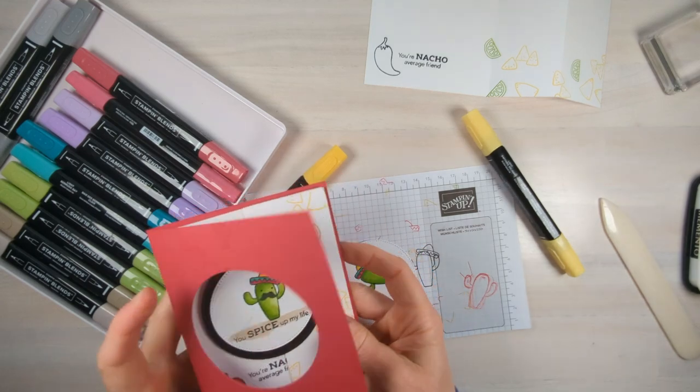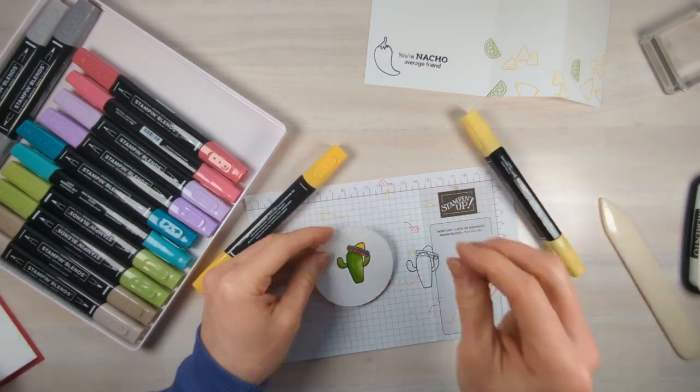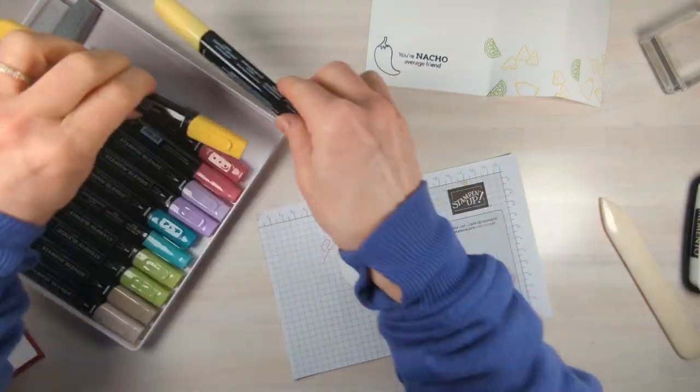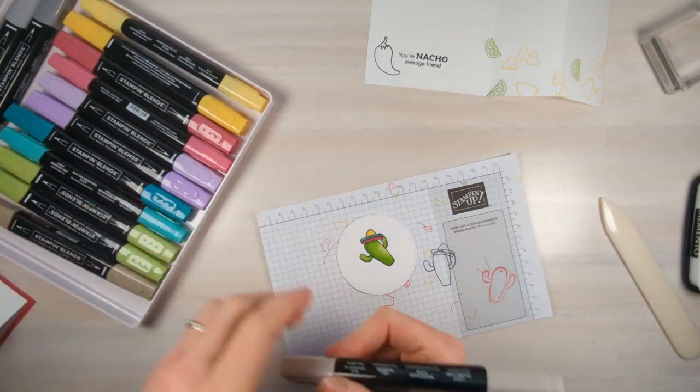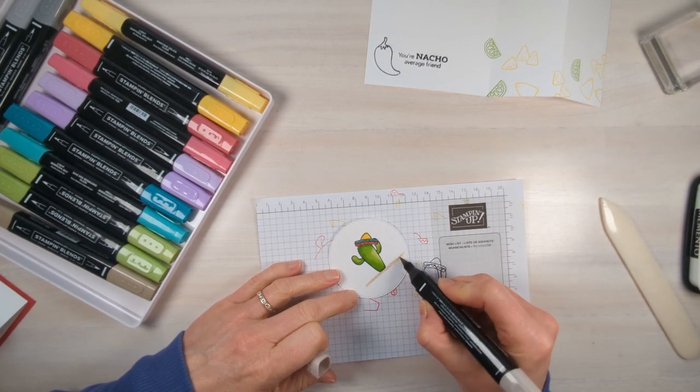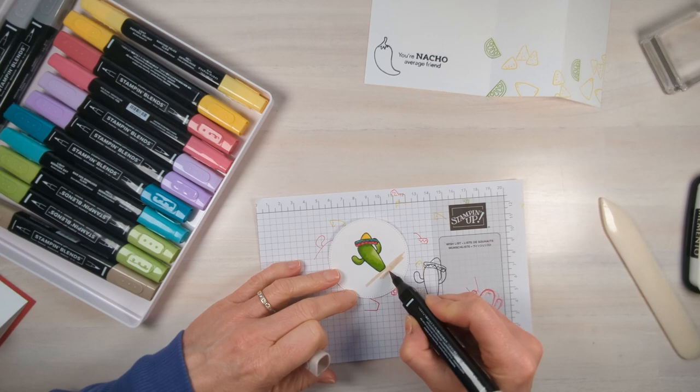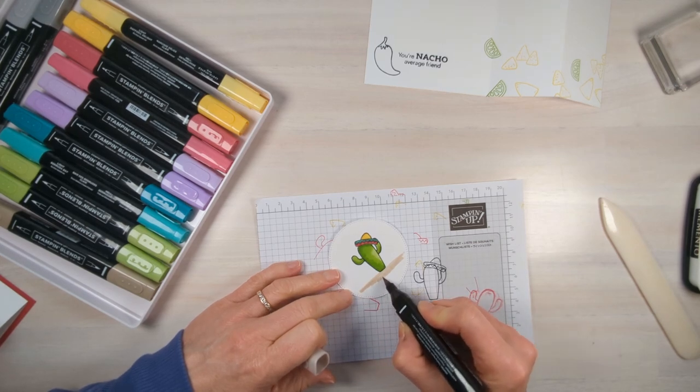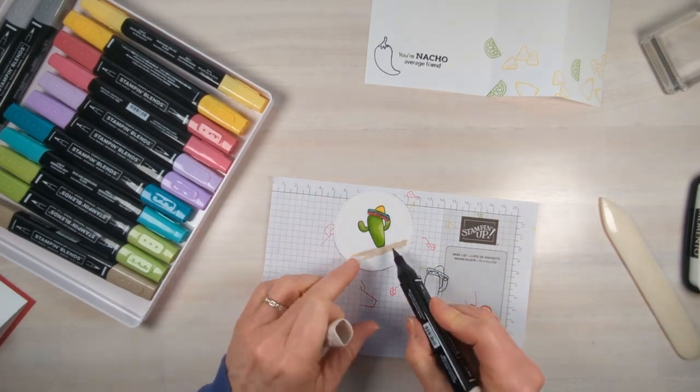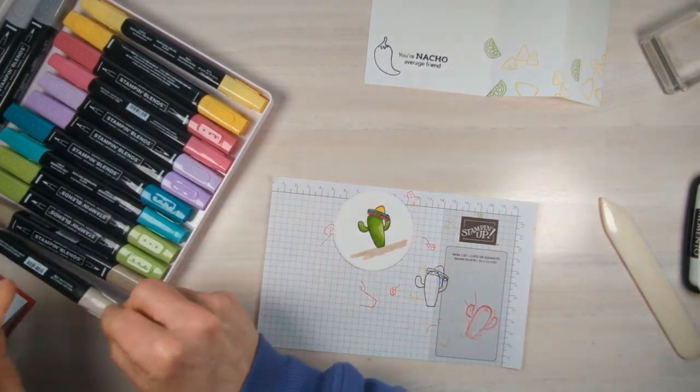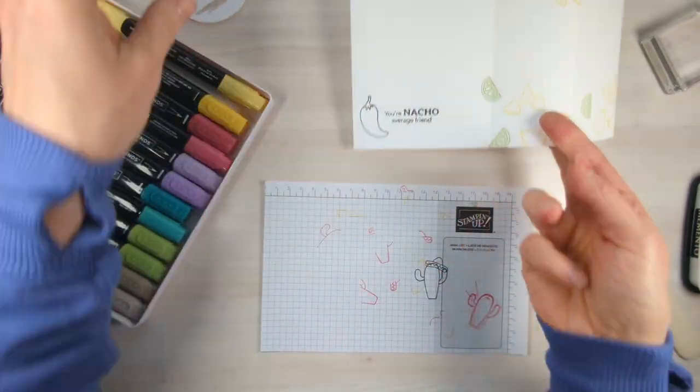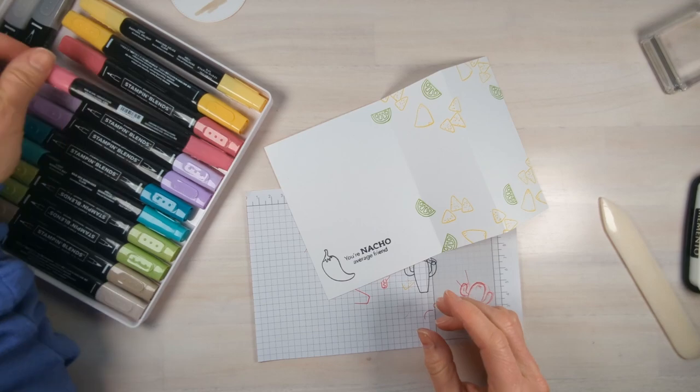Before we do that, we are going to put a little bit of crumb cake just on the bottom of here so this cactus isn't just floating in the middle of nowhere. And then we're also going to stamp our sentiment on top of this kind of sandy color and that's going to make it really pop out. Okay, so let's set this aside and color in our pepper.